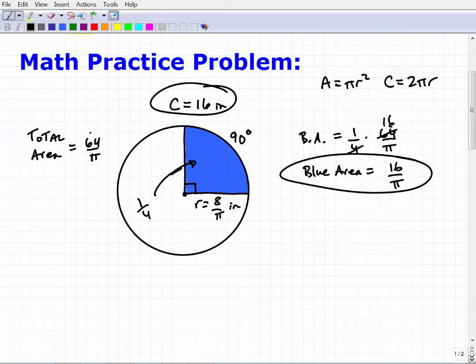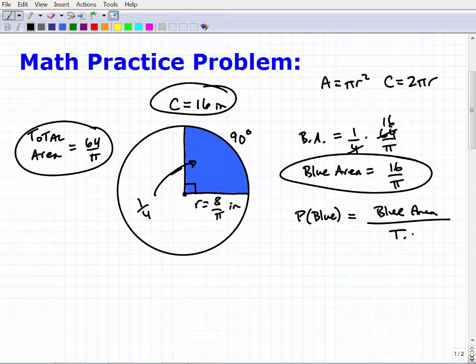So the probability, remember, the probability of you landing on blue is going to be the area. When you're dealing with probability and area prompts, it's always going to be the little area that the probability, it's asking the probability of that event occurring. So in this case, it's the blue area over the total area. So let's go ahead and calculate this.